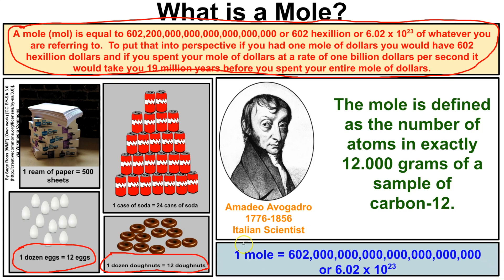The word dozen has meaning — it means 12, whether it's donuts, eggs, or students. In the beverage industry, a case of soda contains 24 cans or bottles. In the office supply world, one ream of paper comes with 500 sheets. So these words — ream, case, and dozen — all have meaning: ream is 500, case is 24, and dozen is 12. In chemistry, the unit mole is equal to 6.02 times 10 to the 23rd of whatever you're talking about.